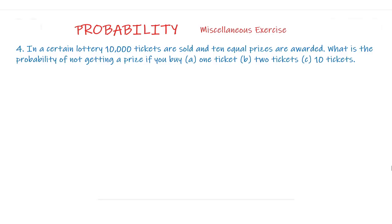Question number 4. In a certain lottery, 10,000 tickets are sold and 10 equal prizes are awarded. What is the probability of not getting a prize if you buy: Part A — 1 ticket, Part B — 2 tickets, Part C — 10 tickets?